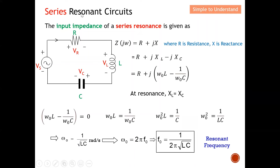Let's start by discussing the series resonator. The input impedance of a series resonator is given by this equation — you can see it consists of R, L, and C. This is the resistive part R, and this is the reactance, which is a combination of L and C. The reactance for the inductor is ωL, and for the capacitor is 1/ωC. This is the complete input impedance of a series resonator.